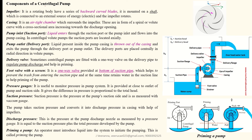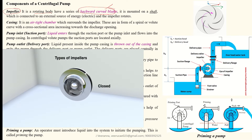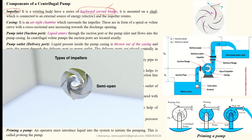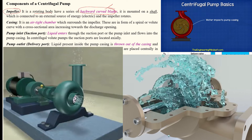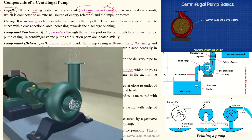Let's see the components of the centrifugal pump. The most important one is the impeller. The impeller is the rotating body, having a series of backward curved blades — the blades are always backward curved at less than 90 degrees angle. These are mounted on the pump shaft, which rotates with the electric motor.